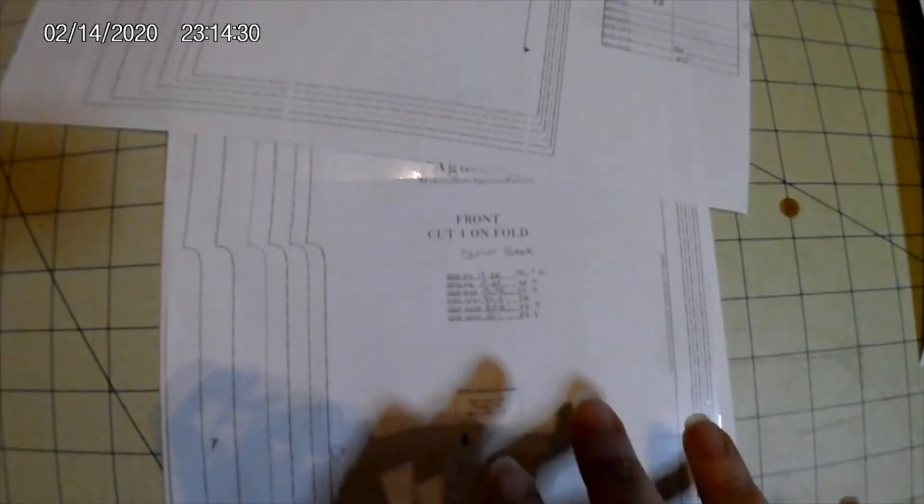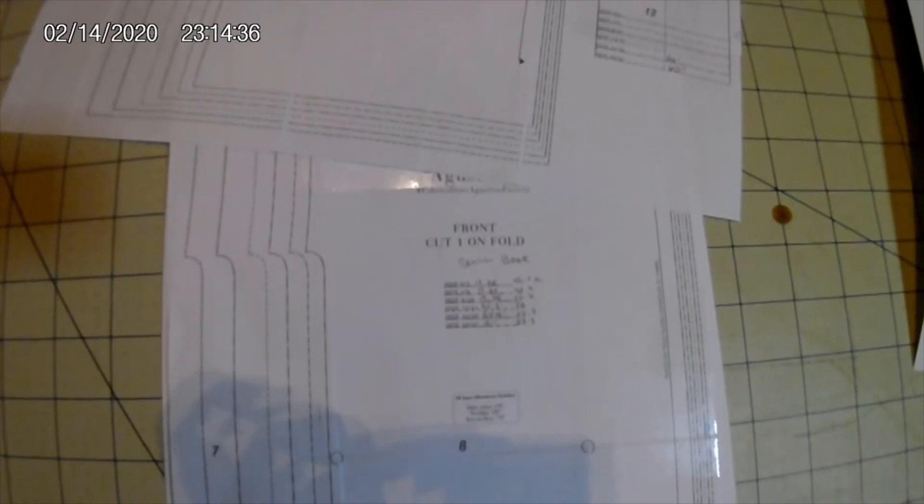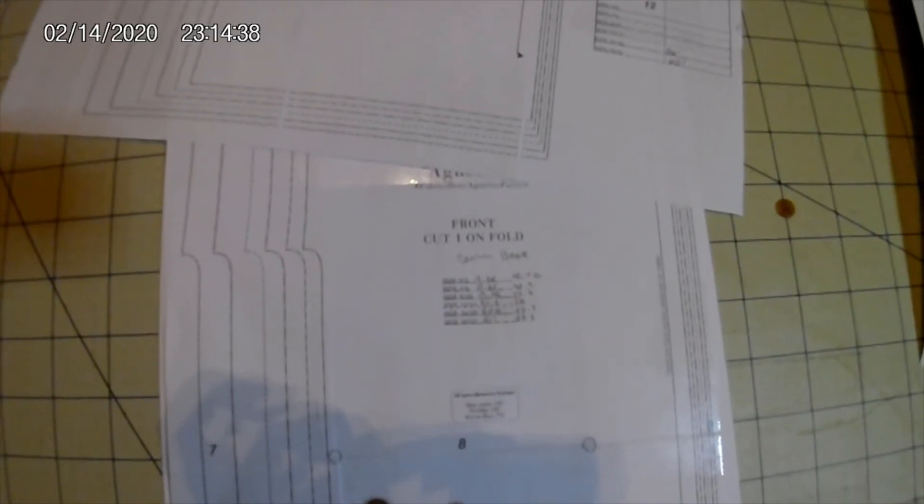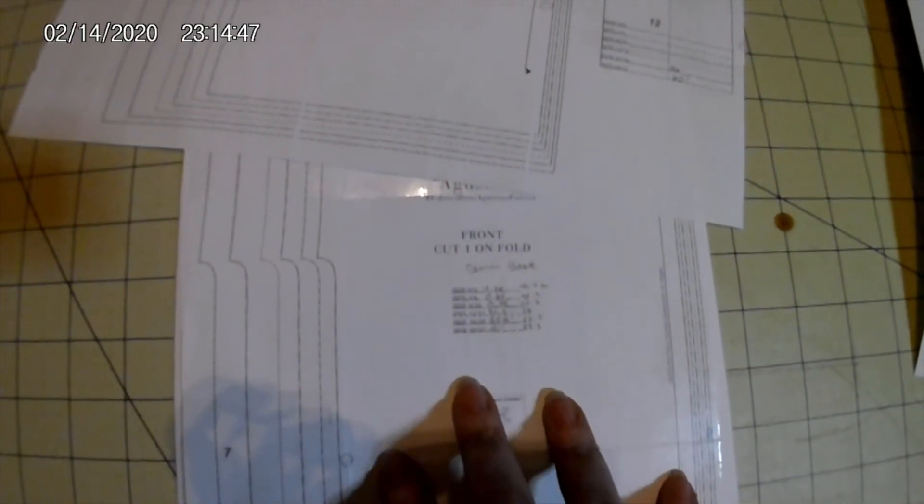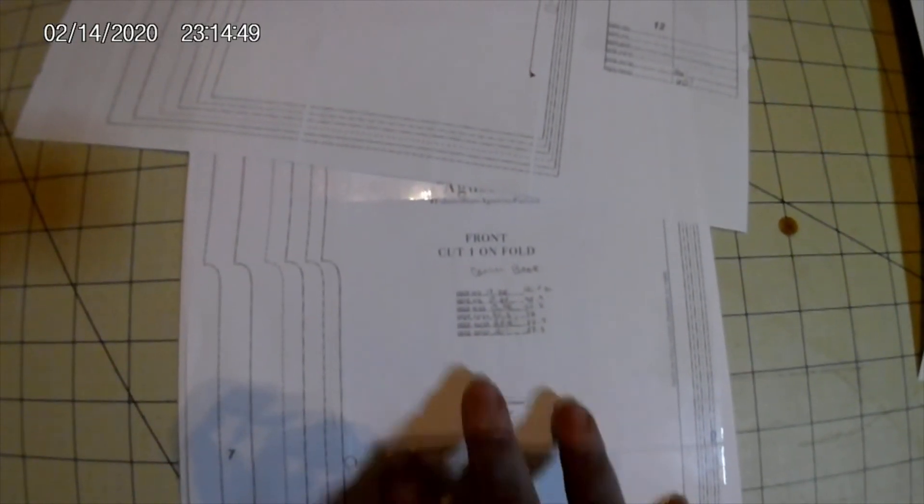So do your measurements, double check and just make sure that you're getting what you think you're getting and that it's going to fit. Don't set yourself up for failure from the beginning. Double check your measurements, do your gauge swatch, do the things you're supposed to do. These will work exactly the same as your standard knit contour patterns.